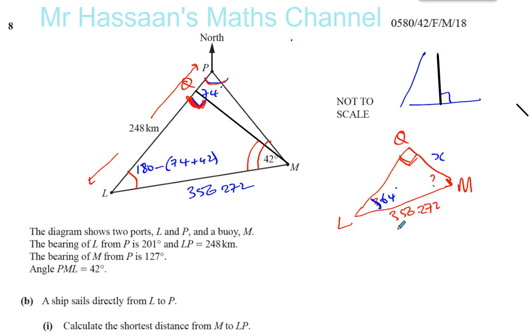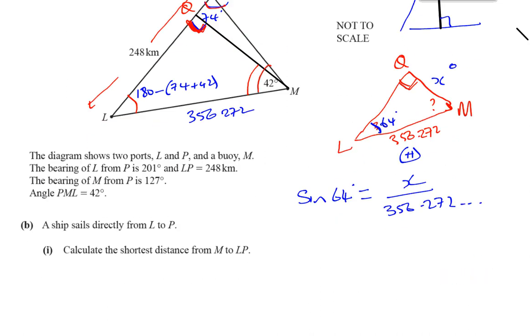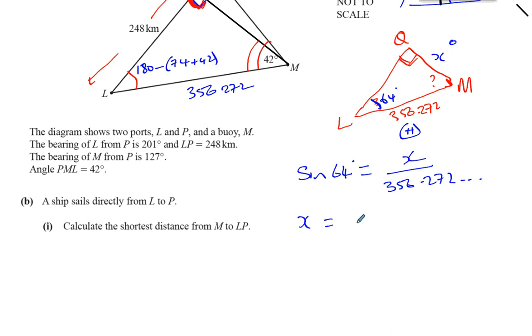So I've got a right angle triangle. I need to find this length here, and I know this length here. I know this angle here. I can use opposite over hypotenuse. This is the opposite, opposite the angle I know, and this is the hypotenuse. So I can say that the sine of the angle 64 is going to be equal to the opposite over the hypotenuse written in its more accurate form. So then I can say X is going to be 356.272 times the sine of 64.